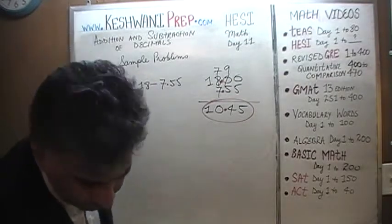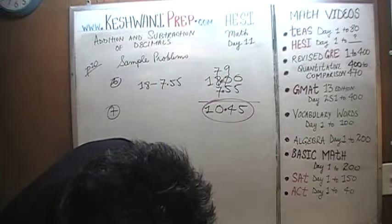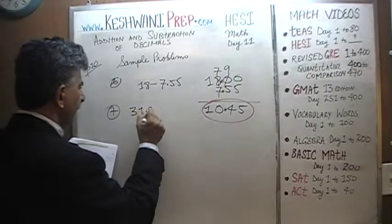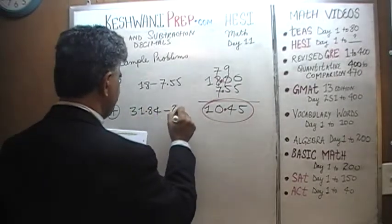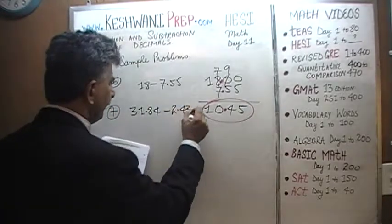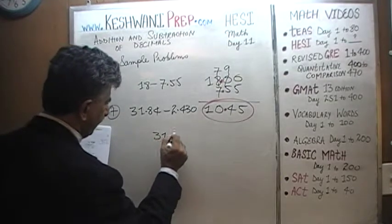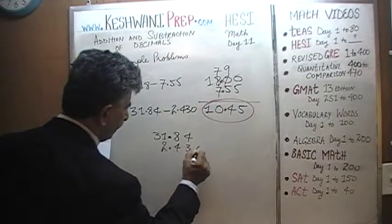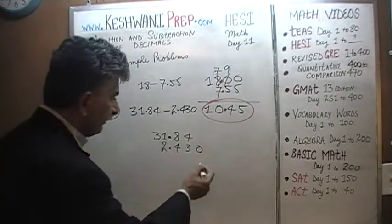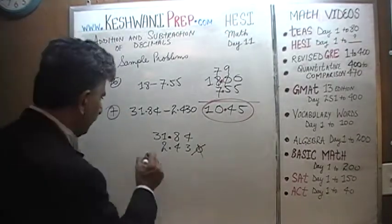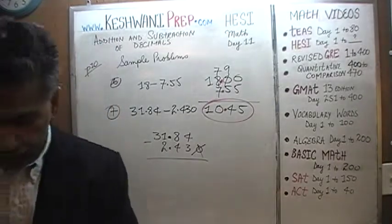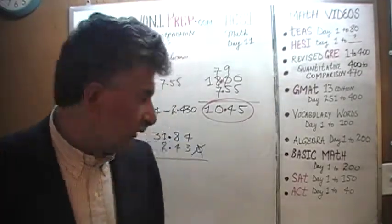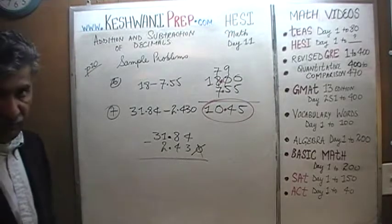Let's do the next one. Number 7 says 31.84 minus 2.430. That 0 there actually doesn't serve any purpose. Essentially what they are asking us to do is to subtract 2.43 from 31.84. Let's do that. And this is going to be simple because these digits are bigger than the digits at the bottom. It's going to go faster. 4 minus 3 is 1. 8 minus 4 is 4.